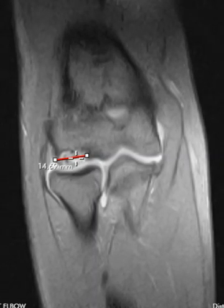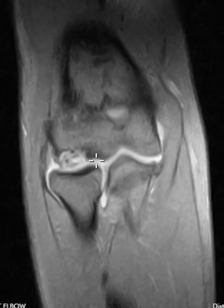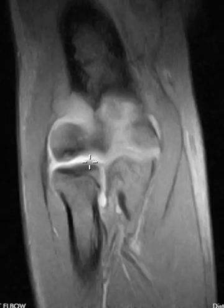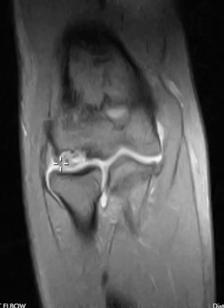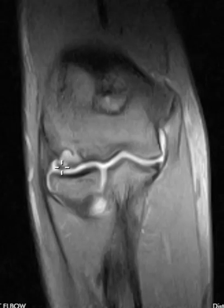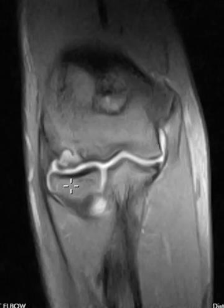When we see an OCD, we want to decide: is there loosening, is there displacement? That's what the surgeons want to know. If there's no loosening or undermining of fluid or displacement, they may be able to treat it conservatively, but if not, then they have to go in and drill it. In this case, we see that there's an awful lot of fluid going underneath it — so this is definitely loose — and we also see this linear band here. This is a fragment that is displaced, so this is a displaced osteochondral fragment.